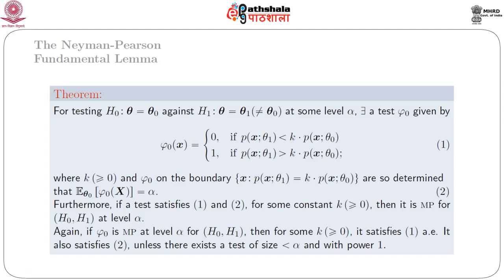Where k is non-negative, and phi naught on the boundary — that is, for all x where p(x, theta_1) equals k times p(x, theta_naught) — is so determined that E_{theta_naught}[phi_naught(x)] equals alpha, where alpha belongs to the open interval (0,1) and is prefixed. Furthermore, if a test satisfies equation 1 (the form of phi naught) and equation 2 (E_{theta_naught}[phi_naught(x)] = alpha), then k and the boundary value are so determined that the test is of size alpha.